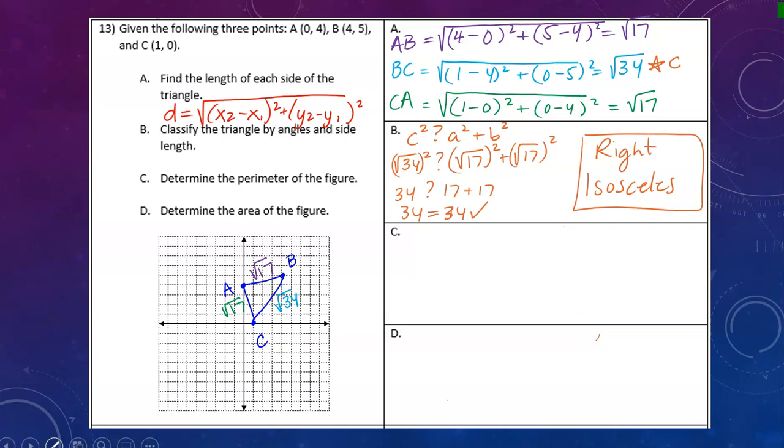Part C asks us to determine the perimeter. I'll take my three sides—square root of 17, square root of 34, and square root of 17—and add them. I'll add the two like radicals: two square root of 17 plus square root of 34. That's my perimeter.